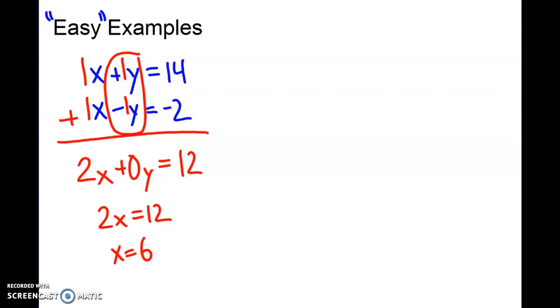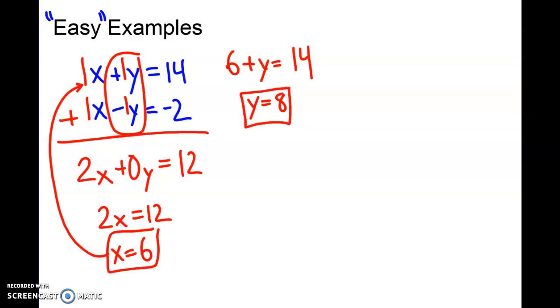Now I take my x equals 6 and plug it back into either one of these equations to figure out what y has to be. So here I have 6 plus y equals 14. I jumped the gun there - in my head I subtracted 6, and y equals 8. That's what I would classify as an easy example. We have the same coefficients already and I don't need to do anything with it.